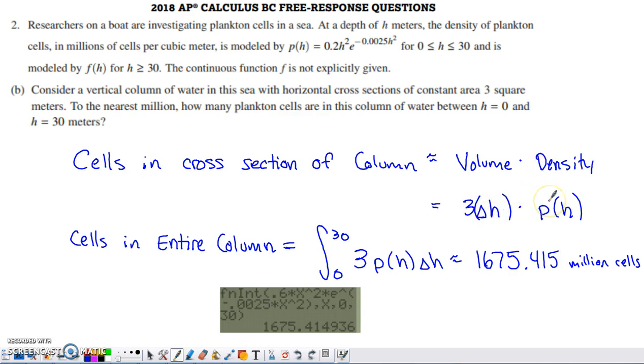The density is represented by the function p of h. So if I have this representing the number of plankton cells in one cross-section of the column, and I want to find the total number of plankton cells in the entire column, I'm going to have to add together a bunch of these approximations.